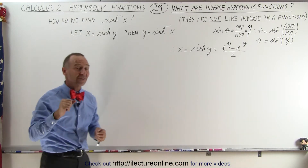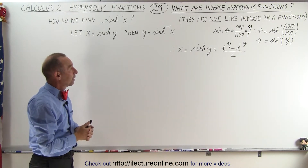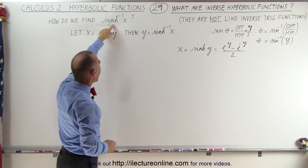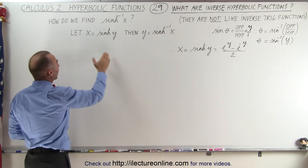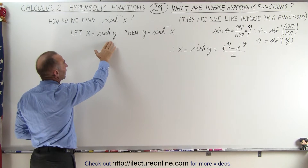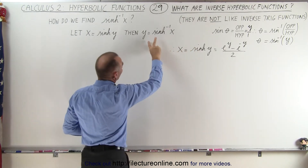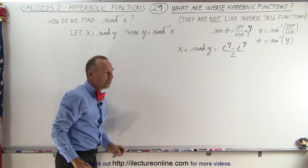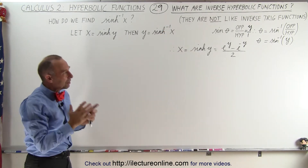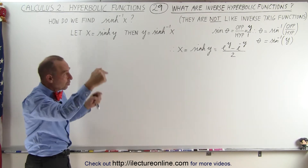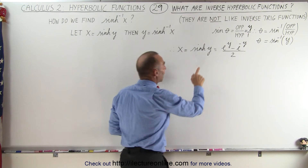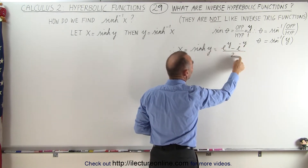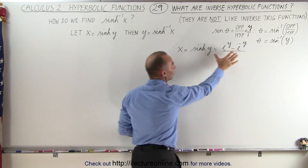Well in that respect it's the same for hyperbolic functions. Let's say we want to find the inverse hyperbolic sine of x. We define x to be equal to the hyperbolic sine of y, then just like before we reverse the variables so y is equal to the inverse hyperbolic sine of x. But in this case it's different because we're not dealing with an angle or a triangle. Here we define the hyperbolic sine of y as e to the y minus e to the negative y, divided by 2. So x now becomes equal to that.